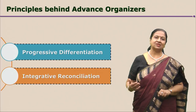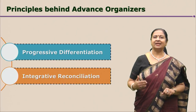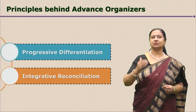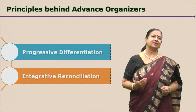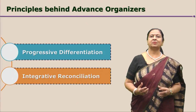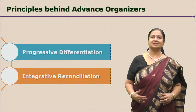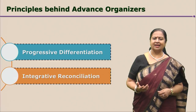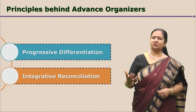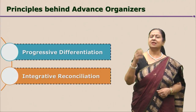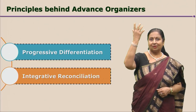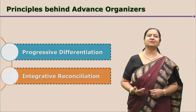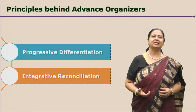Once the progressive differentiation takes place, it is necessary to bring in integrative reconciliation. If progressive differentiation is the analysis of the main concept into sub-concepts, integrative reconciliation involves synthesizing the information from the bottom-most part of that organizer towards the main concept — that is called class inclusion — so that we realize that fishes, amphibians, and others are nothing but vertebrates, and vertebrates are nothing but animals, and animals are living beings. So we do that in reverse order.